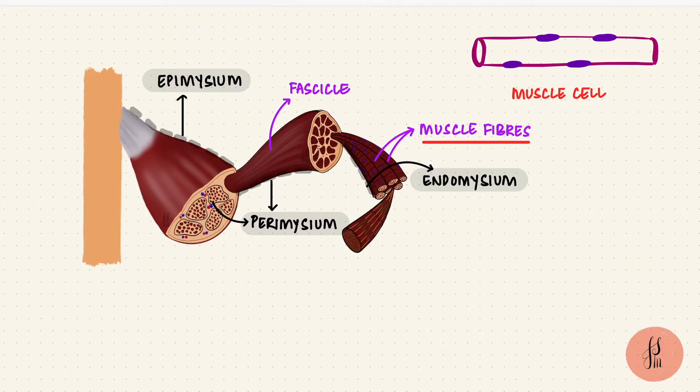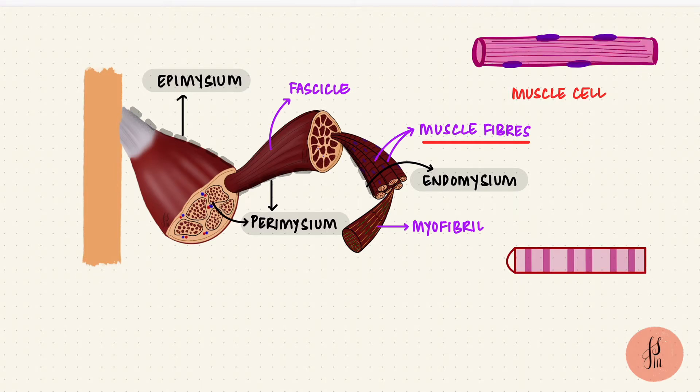Each fiber is made up of myofibrils. The myofibrils have alternating dark and light bands, making them, and so the muscle fibers as well, striated. So skeletal muscles are striated muscles.